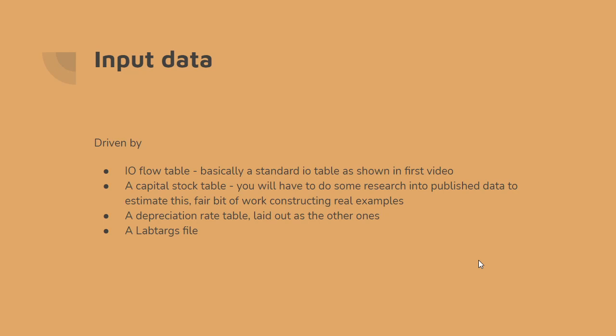The input data for the programs are comma-separated value tables: an IO flow table — basically a standard IO table as shown in the first video — and a capital stock table laid out the same way. You'll have to do some research using published data to estimate this for real economies. It's a fair bit of work: if you want to use a 50 by 50 or 80 by 80 IO table, which would be realistic for published data, and then estimate the capital stocks, you'll find yourself having to do quite a lot of interpolation because national accounts don't break down capital stocks into as much detail as the IO table flow data.